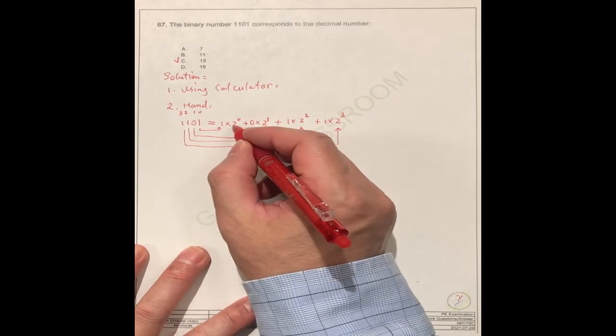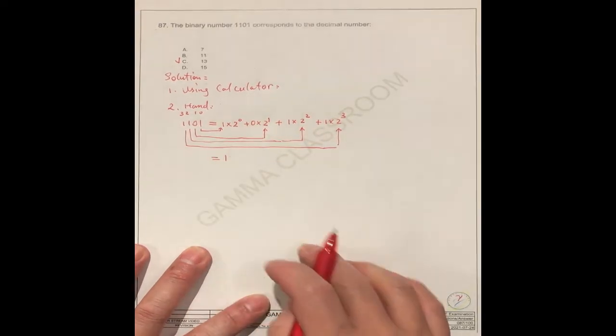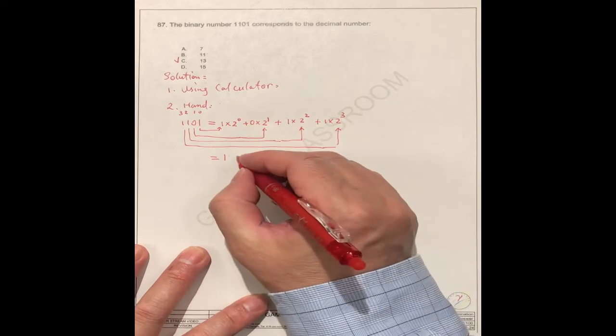So this is 2 to the power 0 is equal 1. This is equal to, because this is 0, is equal to 0.